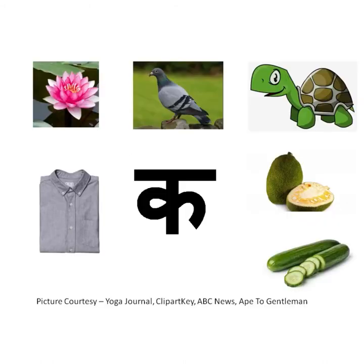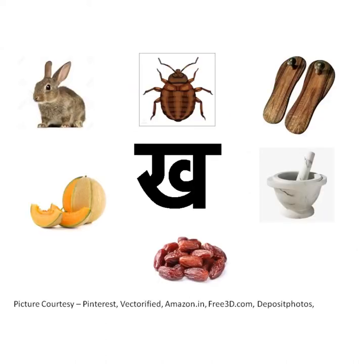Vyanjan Ka: Ka se Kamal, Ka se Kabutar, Ka se Kachua, Ka se Kamiz, Ka se Katahal, Ka se Kakdi. Kha se Khargosh, Kha se Katmal, Kha se Khadau, Kha se Kharbujah, Kha se Kharal, Kha se Kajur.